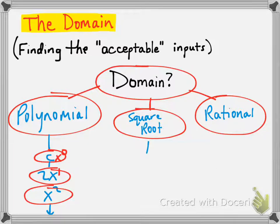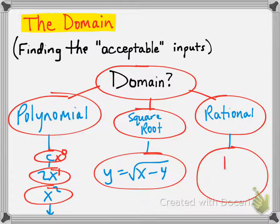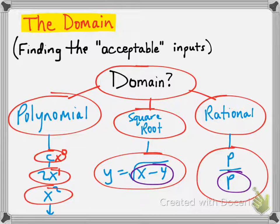Square root functions look like y equals the square root of x minus 4, where you have limitations on what x can be — what you're allowed to plug in. A rational function is a polynomial over a polynomial. You have a denominator, so there are possible issues, and for square root functions you can't have something less than 0 under the radical. But polynomial functions have no issues — the domain is always all real numbers.